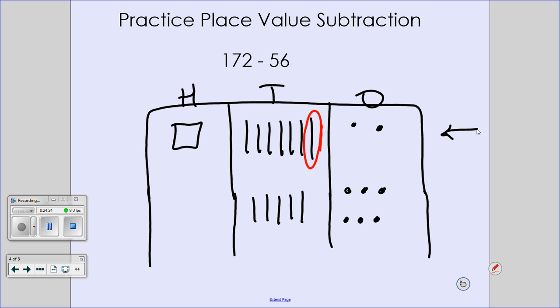Stay with me. How many ones do I get when I trade out that ten? Ten. So now I have a total of twelve ones subtract six ones. Does that make my job a little easier? Yeah. What is twelve ones minus six ones? Six.